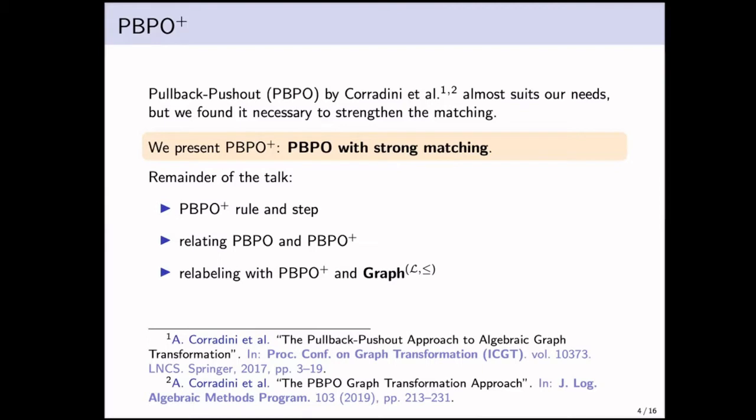PBPO+ is really just PBPO but with a stronger matching mechanism. It doesn't completely subsume PGR, but it captures all the things that we actually wanted to express. I will not go into further details on that in this talk. Instead, I will discuss the notion of PBPO+ rule and step, relate in detail PBPO and PBPO+, and show how using PBPO+ and the category that we've newly introduced, called Graph(≤,⊔), you can actually relabel graphs in a way that we think is quite easy to define.